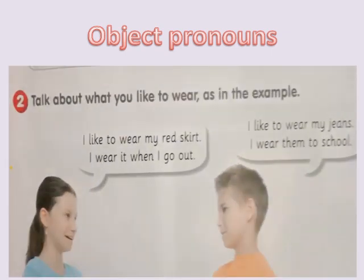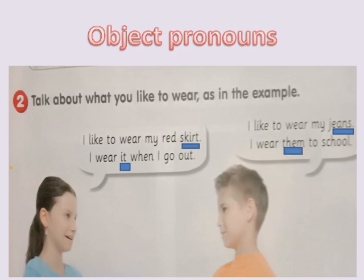Our grammar lesson is about object pronouns. Look at the examples in Activity 2: talk about what you like to wear. For example: I like to wear my red skirt. I wear it when I go out — 'it' here refers to the skirt; it is an object pronoun that replaces the word skirt so we don't repeat it twice. Second example: I like to wear my jeans; I wear them to school — 'them' refers to jeans. We use 'them' so we don't repeat the word jeans again.